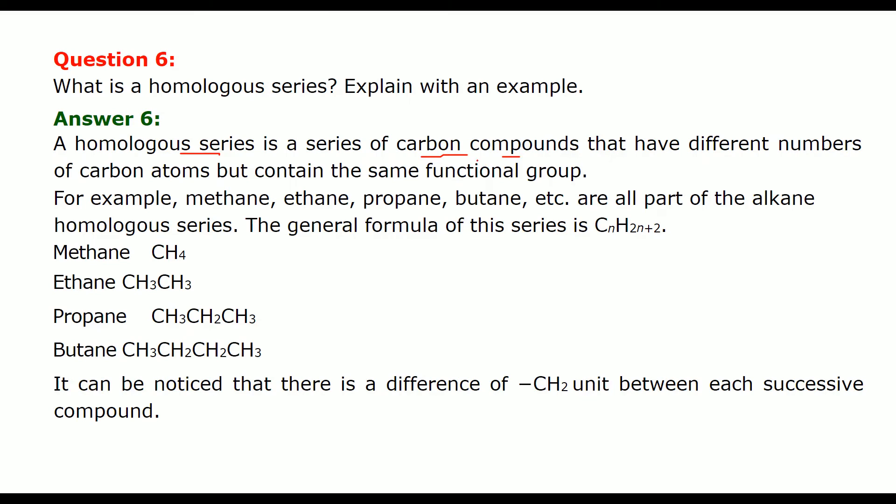A homologous series is a series of carbon compounds that have different number of carbon atoms. But they fall in the same functional group. For example methane, ethane, propane, butane. They all are part of alkane. Alkane homologous series. The general formula is CnH2n plus 2. Just place 1 here. This will be C1H, 2 into 1 is 2, 2 plus 2 is 4. So CH4. Methane. Now you put 2. You put 3. You put 4. You will get ethane propane butane. And you must notice here the difference of each of them is CH2 unit. Successive compounds.